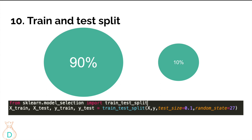I also set random_state=27. You don't have to use a random state, but including one makes your train/test split consistent every time you run it. Without a random state, every run gives a different split. The random state can be any number. If you want consistent, reproducible results, specify a random state; if you want it to be random each time, leave it out.